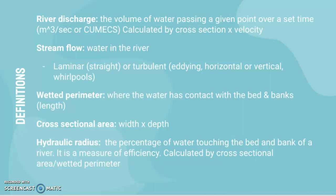River discharge is the volume of water passing a given point over a set time. It can be measured in meters cubed or meters cubed per second, also known as cumecs. It is calculated by multiplying the cross-sectional area of the river at a certain point by the velocity of the water moving past that point.